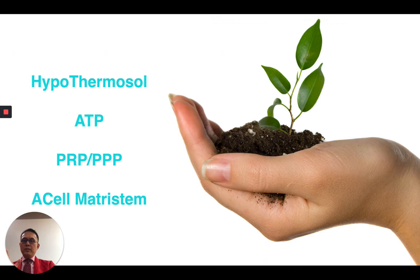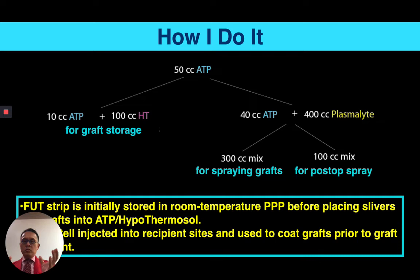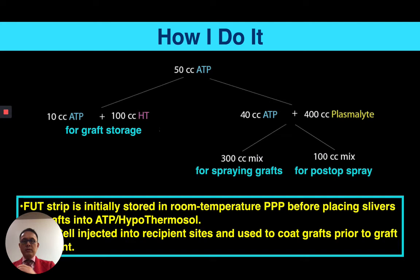We'll end with regenerative medicine — I believe these are a continuum. Practically speaking: I take ATP, which comes in 25 and 50 milliliter bottles — 50 ml for larger cases, 25 for small. I split it: 10 cc's of ATP and 100 cc's of hypothermosol for graft storage, and 40 cc's of ATP with 400 cc's of Plasmalite mixed together. I spray all the grafts to keep them hydrated during surgery, and the post-op spray is used by patients every hour until gone — usually two to four days, which is exactly what's needed to keep grafts surviving.